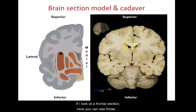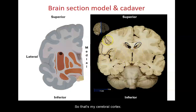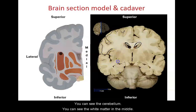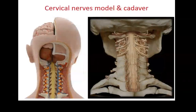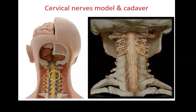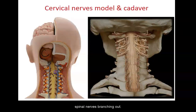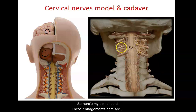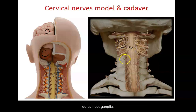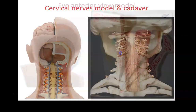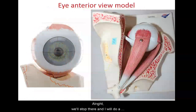In a frontal section you can see the lateral ventricles, the gray matter on the outer layer which is the cerebral cortex, the cerebellum, and the white matter in the middle. Looking at the cervical nerves, you can see the cerebellum sticking out the back of the skull, the spinal cord, spinal nerves branching out, and the occipital lobe of the cerebrum. The enlargements on the spinal cord are dorsal root ganglia, which connect to spinal nerves as they continue out. We'll do a different video for eyes and ears.